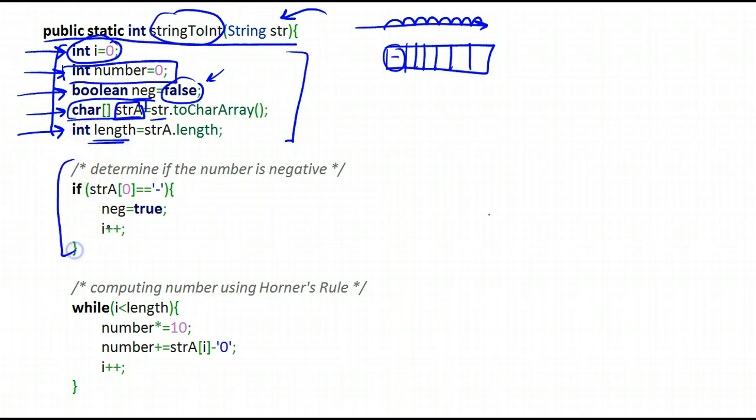So like I said, the first step in our algorithm is to check if the number is negative. And to do that I will examine the first character in my string. You notice I'm using the string array here. So it's an array of characters. I examine it and I ask the question is it equal to a dash? If it is then I set negative true and I increment i.